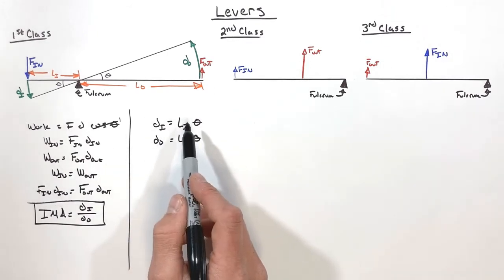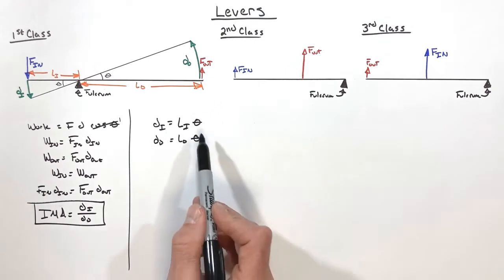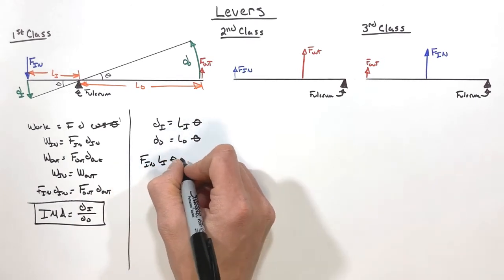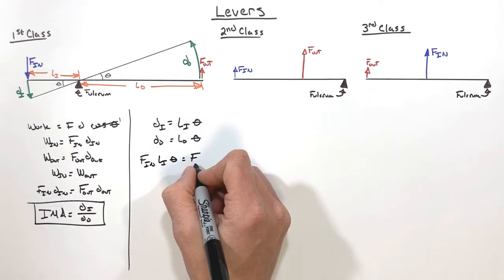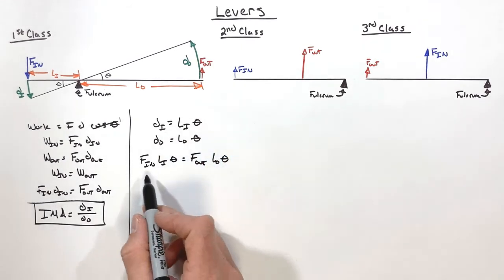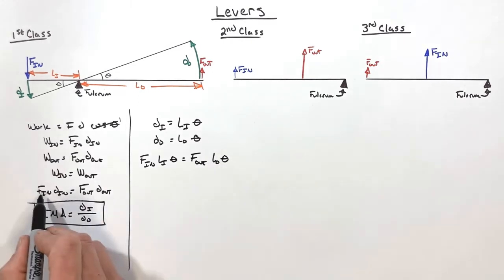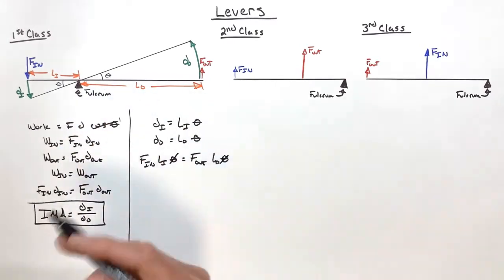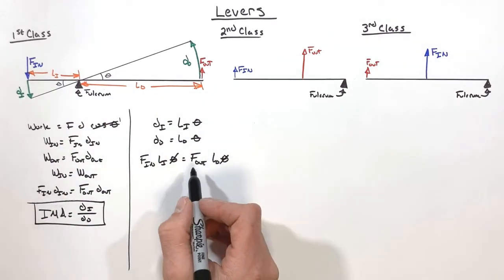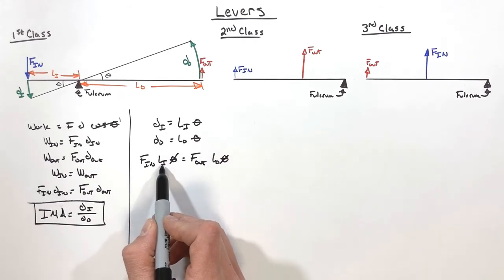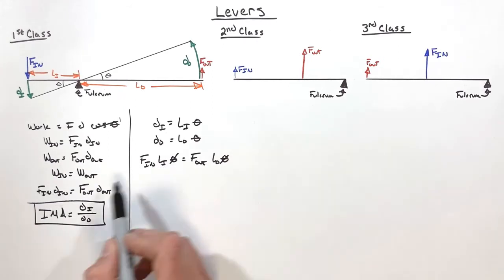So when we put all this together, we can see by combining this with our equations over here, what we're going to get is F_in times L_i times theta equals F_out times L_o times theta. And while this doesn't seem like any sort of revelation, nor does this equation, I want you to realize the angle theta, whatever that angle is, it cancels out. And so what we're able to do here is we can look at the lever as a force and a length of the lever, rather than its displacement.